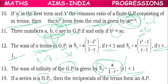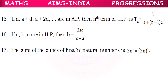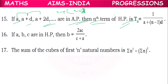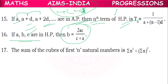If a series is an HP, then the reciprocals of all its terms form an AP. So HP is essentially a reciprocal of AP. If a, a+d, a+2d are in AP, then the nth term of the AP is a + (n−1)d, and for the HP it is 1/[a + (n−1)d] — the reciprocal. If a, b, c are in HP, then the harmonic mean b = 2ac/(a + c).